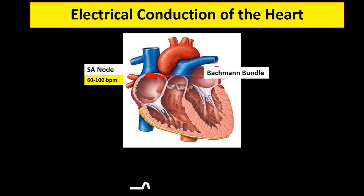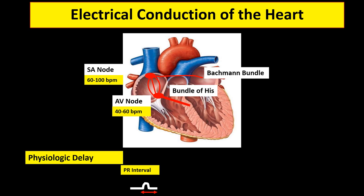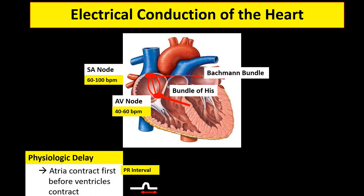The impulses from the SA node travel to the atrioventricular node or AV node and bundle of His. The AV node is located at the apex of the triangle of Koch. It is a subsidiary pacemaker with an inherent beat of 40 to 60 beats per minute. The AV node together with the bundle of His is called the atrioventricular junction, which acts as the gatekeeper that allows or inhibits impulse to pass through and reach the ventricle. The physiologic delay of impulse conduction from SA node to AV node can be seen on surface ECG as the PR interval. This physiologic delay makes sure that atria contract first, allowing time for transporting blood from atria to ventricle before ventricles contract and eject blood to the pulmonary or systemic circulation.